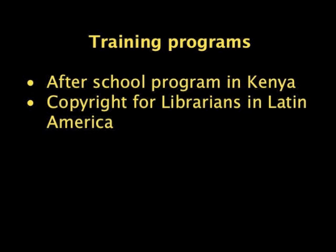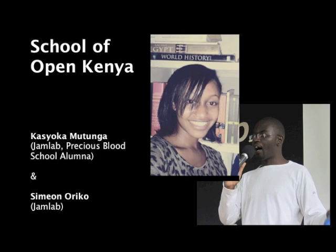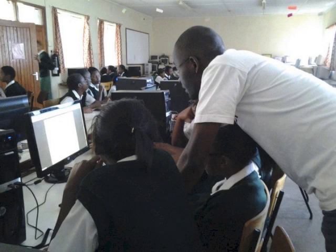Our volunteers are also running training programs in their regions. Two relevant to K-12 educators are the School of Open Kenya — an after-school program for high school students — and Copyright for Librarians in Latin America. The School of Open Kenya is led by two fantastic volunteers: Kasioka Matunga and Simeon Oriko. Kasioka is an alumna of the high school where the program started in Kenya. The program works with high school students across Kenya who learn how they can benefit from open educational resources on the web through a series of after-school workshops. By the end, students have become active participants in open culture, creating and sharing videos and other media online under Creative Commons licenses.